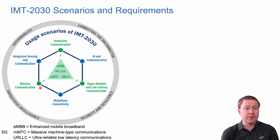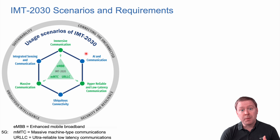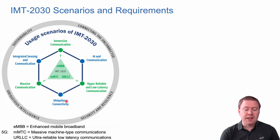In addition to improving the existing three scenarios, there are three new usage scenarios. The first is integrated sensing and communications, where the cellular network is used not only for communications but also for radar sensing and new applications around that. Then there is AI and communications — which means both adapting the standard so that AI can learn about the propagation environment and make protocols work better, and enabling AI at other places by sending model updates required to train AI models. Finally, there is ubiquitous connectivity, which is about connecting the unconnected and ensuring good connectivity all around the globe.